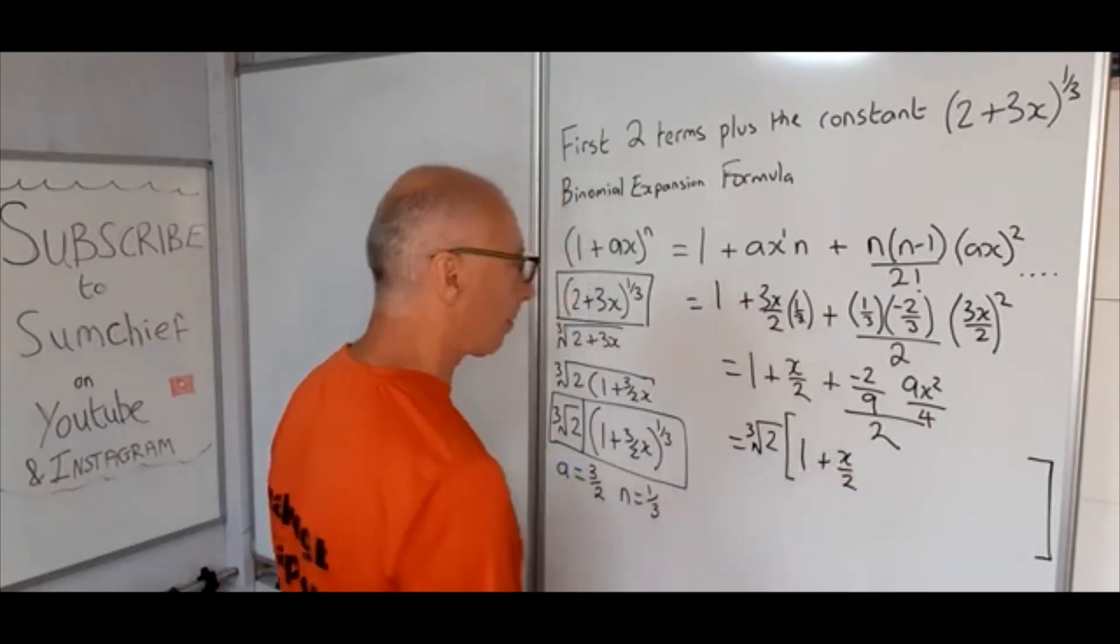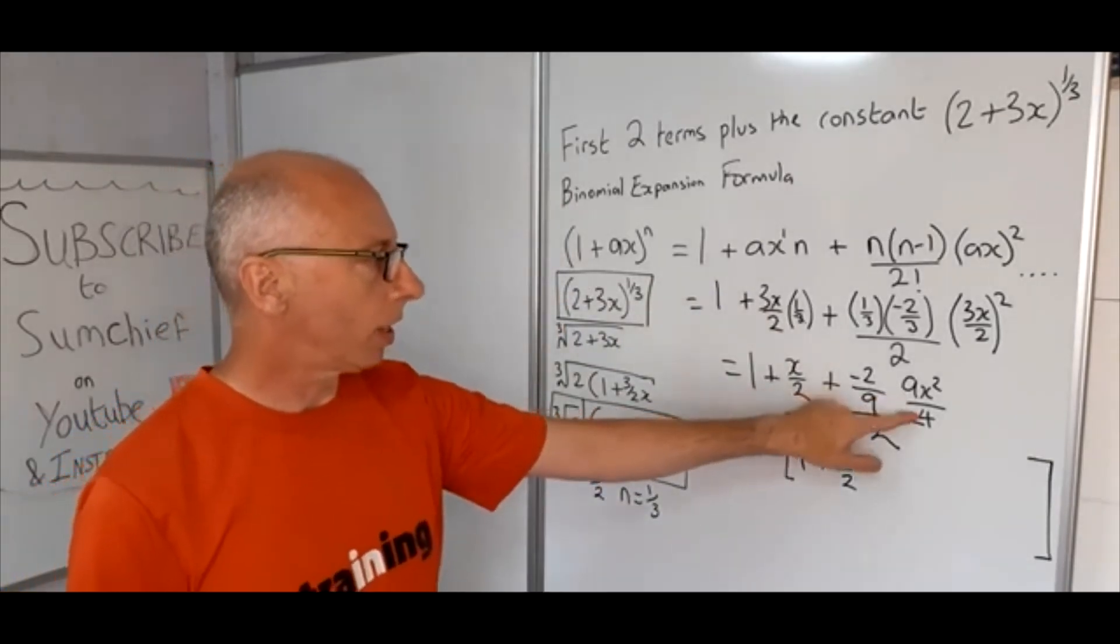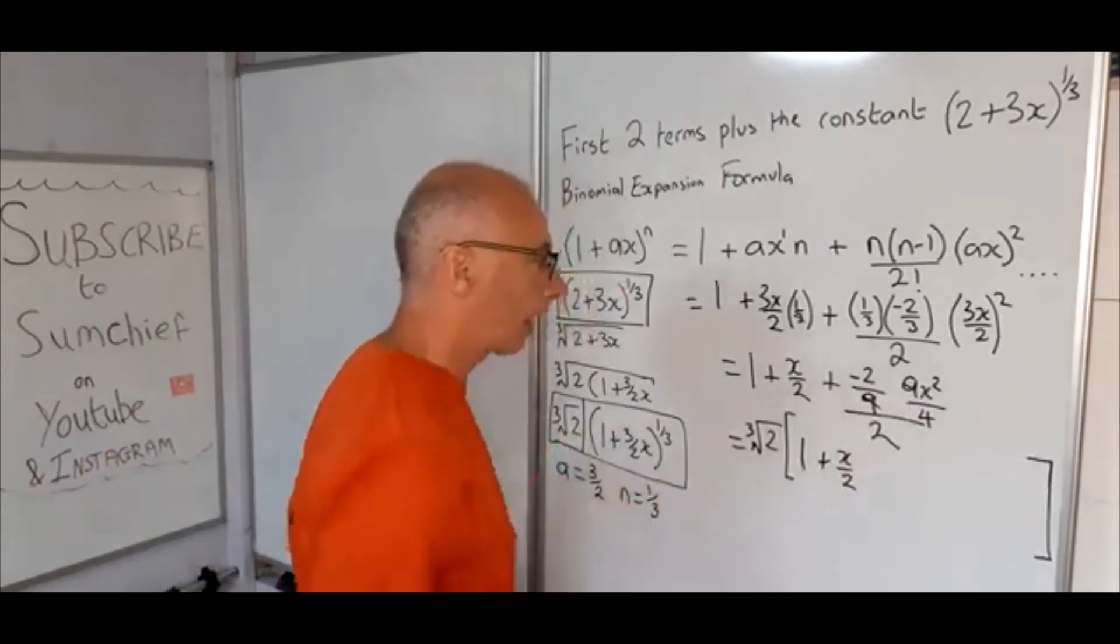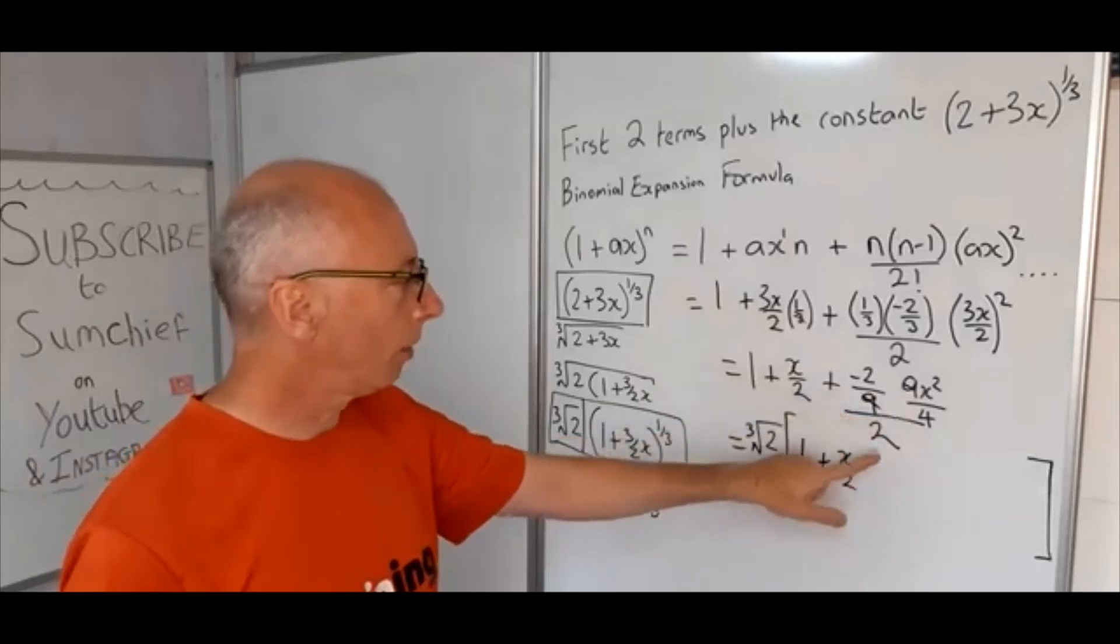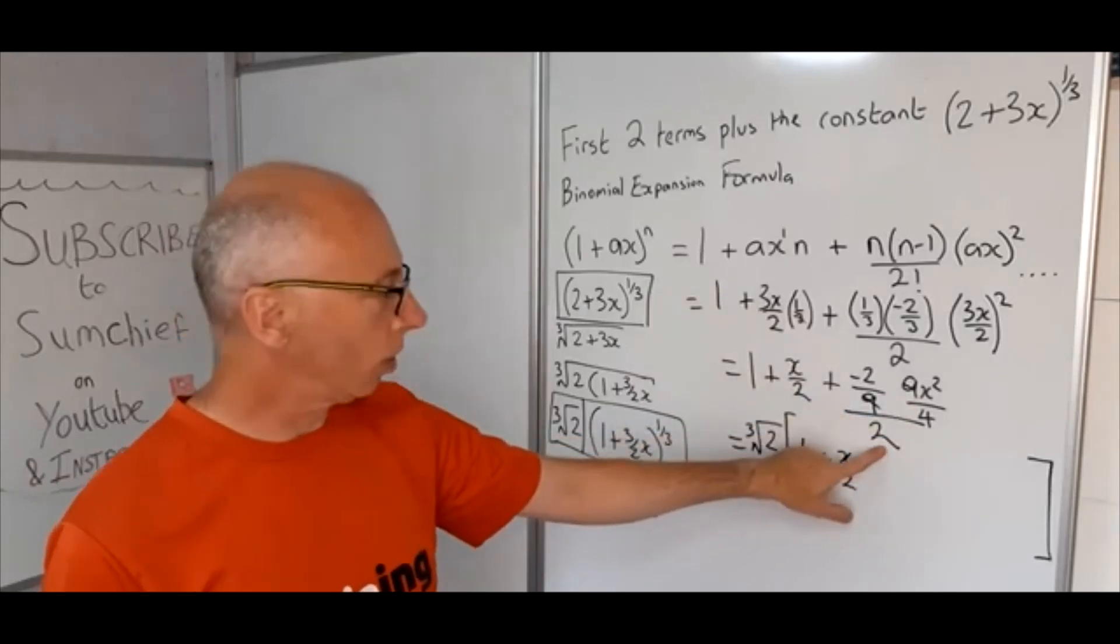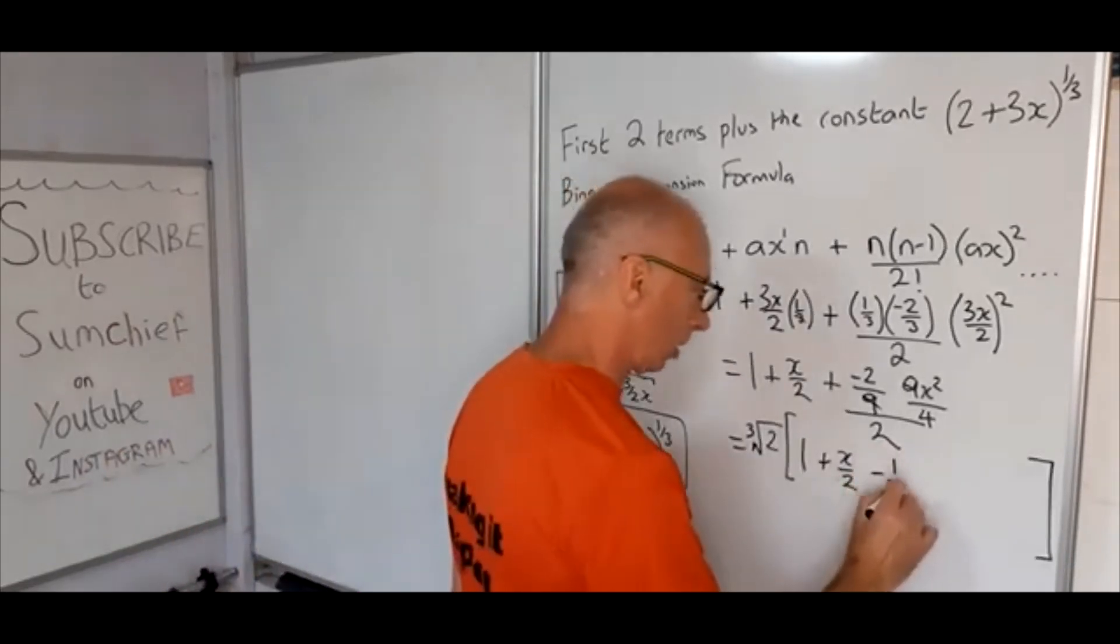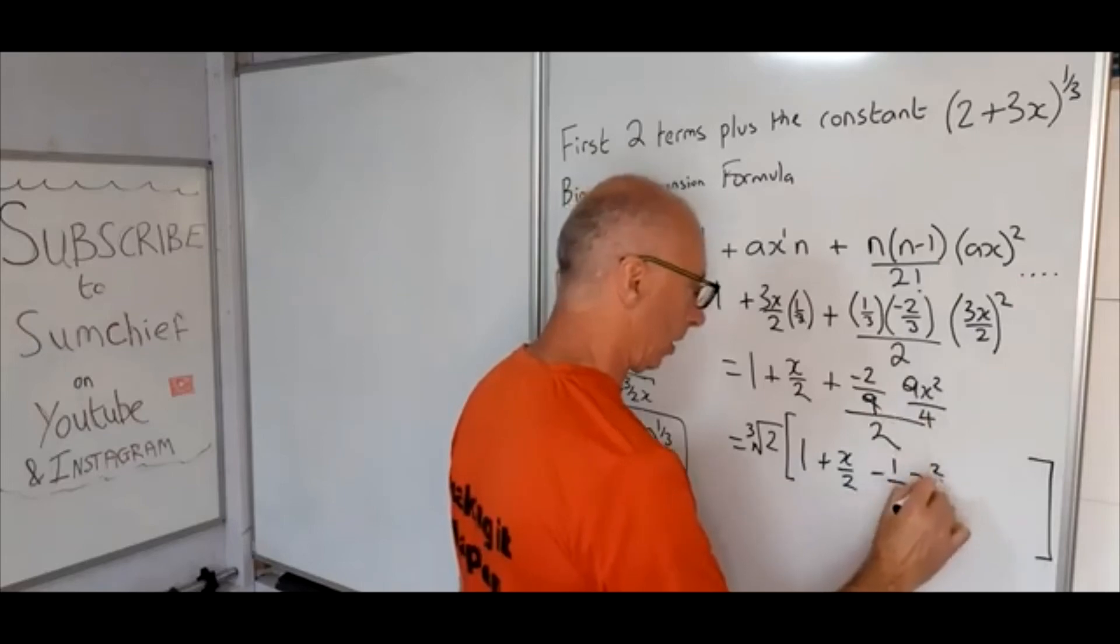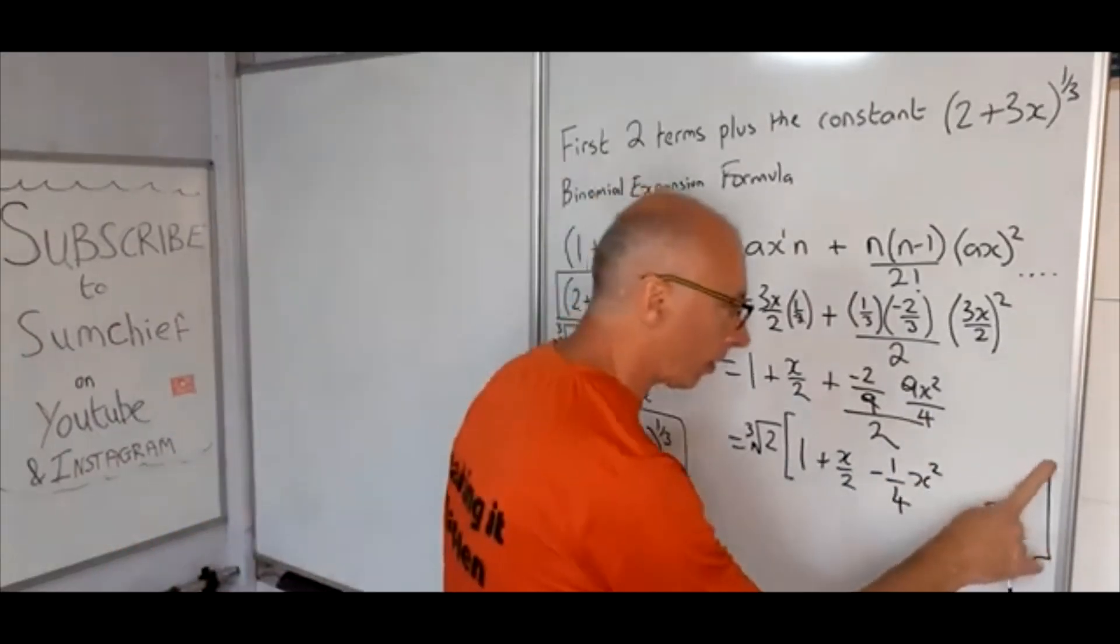That's fine. Right, -2/9 times 9/4, well those cancel out, so -2/4 leaves us with -1/2, and then divided that by 2 gives us -1/4. And then x^2 stays there.